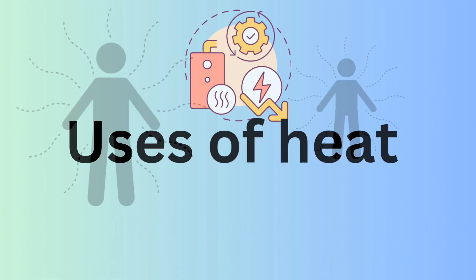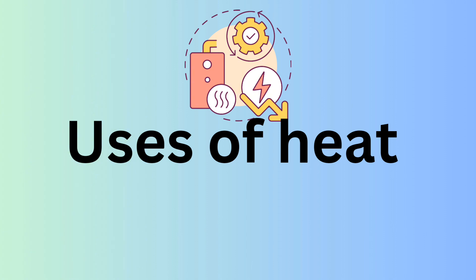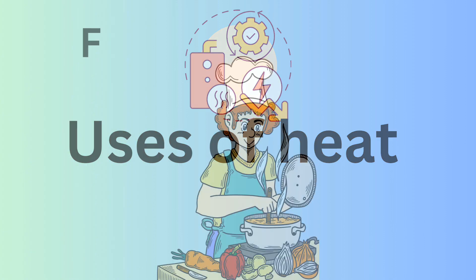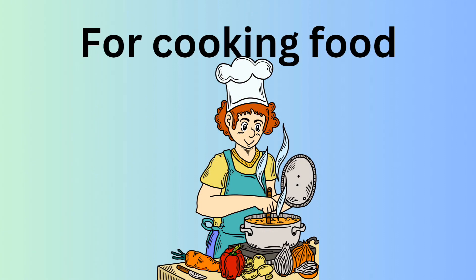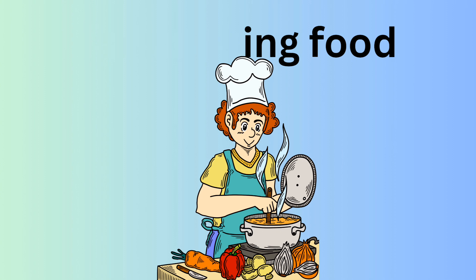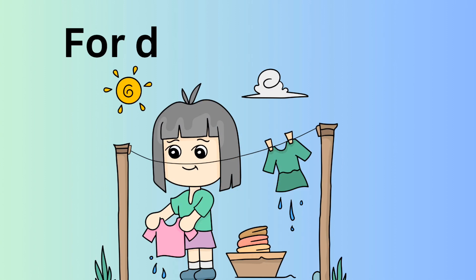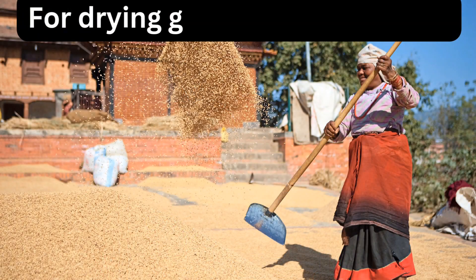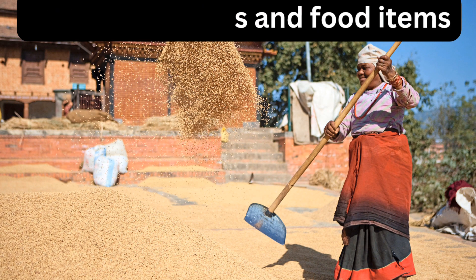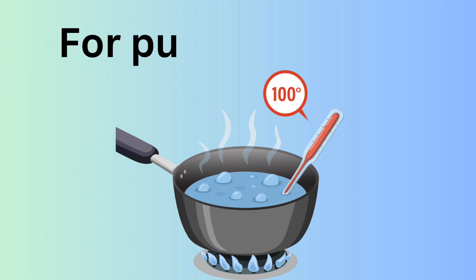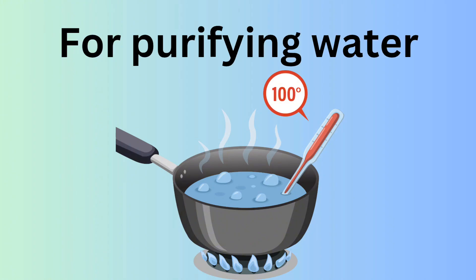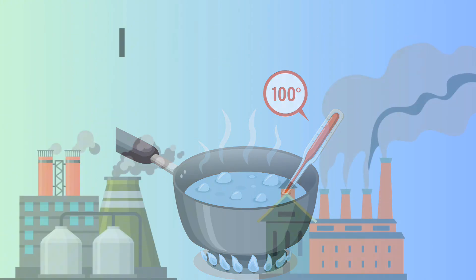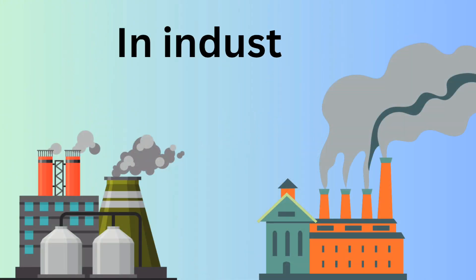Heat energy is used for different purposes: for cooking food, drying wet clothes, drying grains and food items, purifying water, and in industries.